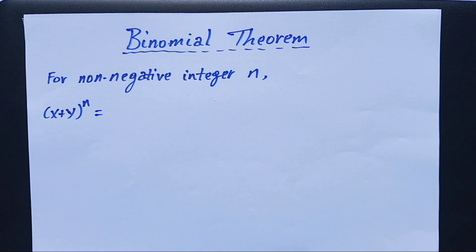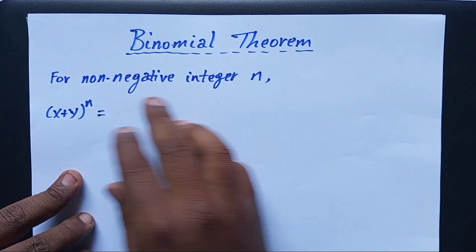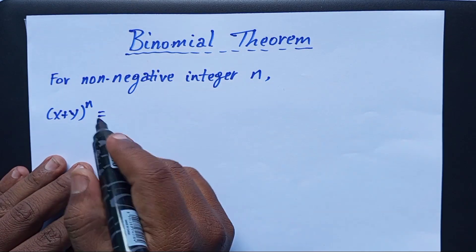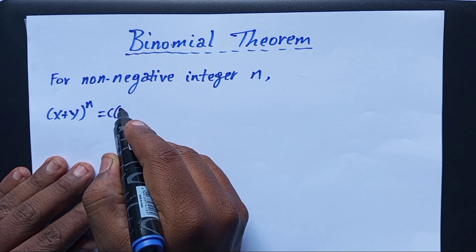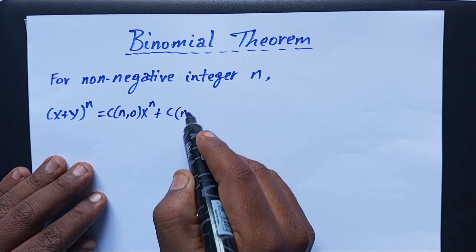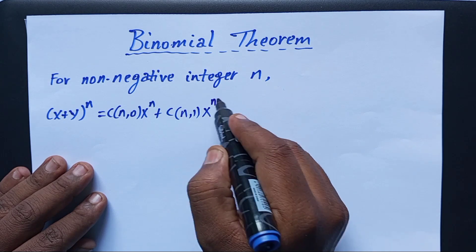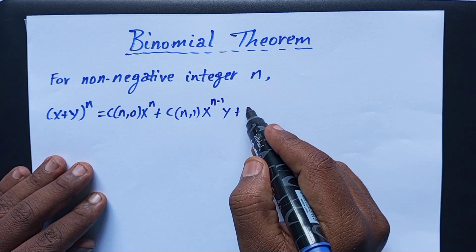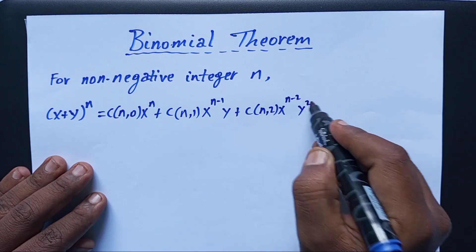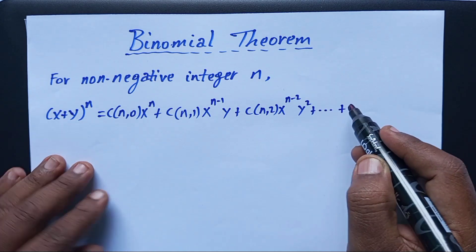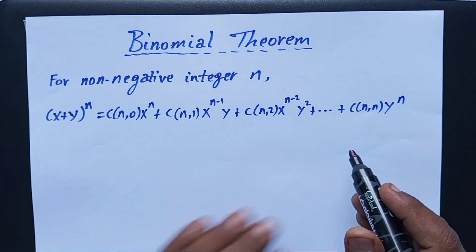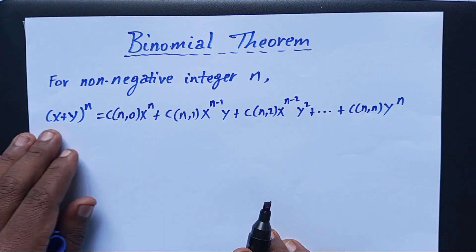Hello everyone. Let us see about the Binomial Theorem. For an integer n, (x + y)^n is expanded using combinations as: C(n,0) x^n + C(n,1) x^(n-1) y + C(n,2) x^(n-2) y^2 + ... + C(n,n) y^n. Using this Binomial Theorem we can expand a given expression.